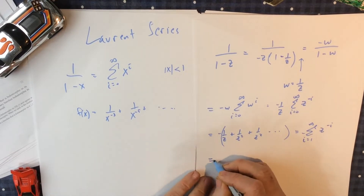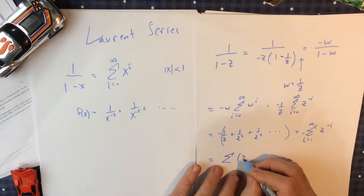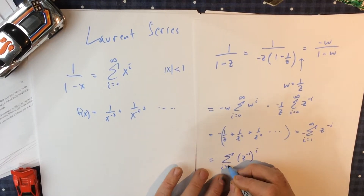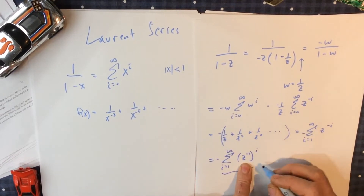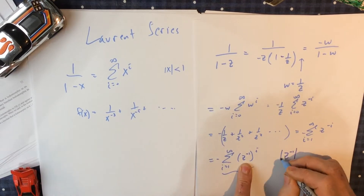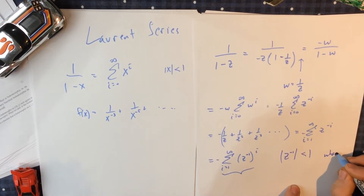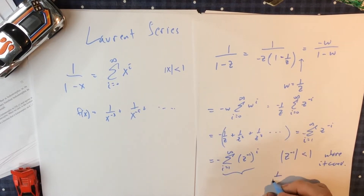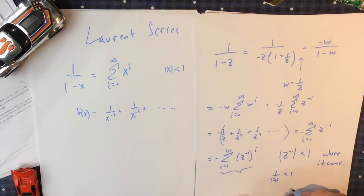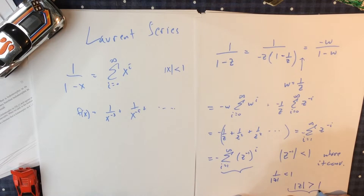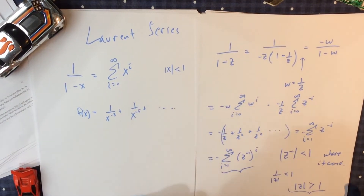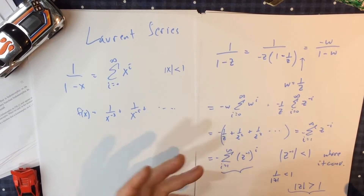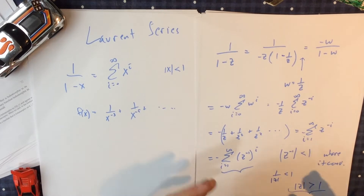Where does this converge? Treating it as a geometric series, we know it converges when the ratio is less than 1. So |z to the minus 1| less than 1 is where it converges. That says 1 over |z| less than 1, so it converges when |z| is greater than 1. You have to put in big z's. With large z, that's where the negative sign comes in to make it balance. I've created a power series using negative exponents for 1 over z.